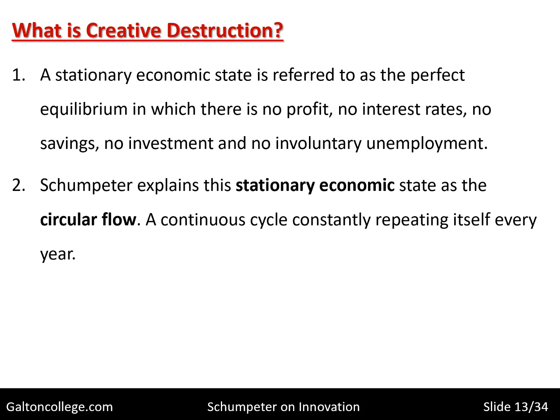Schumpeter explains this stationary economic state as the circular flow — a continuous cycle constantly repeating itself every year. This system will keep moving in perpetuity because there is nothing to knock it out, no external force. All the companies are in perfect competition, producing identical products; they can't differentiate with advertising or physically differentiate because they haven't got the resources. All the consumers have good knowledge of the market — they know the prices, where to get products, and the attributes of those products. So it's like a cycle that just continuously rolls around, the same all the time from one year to the next.